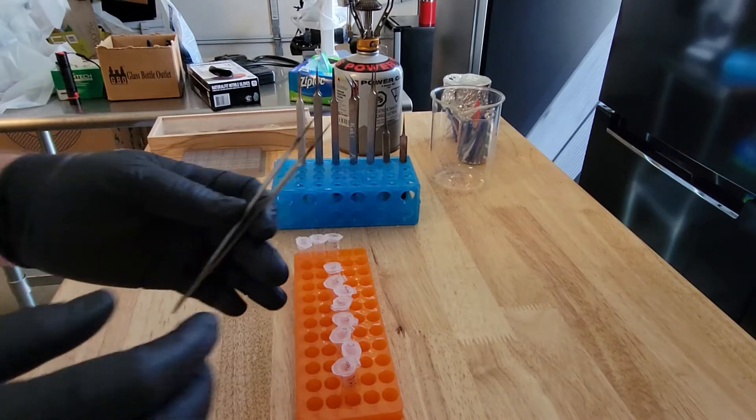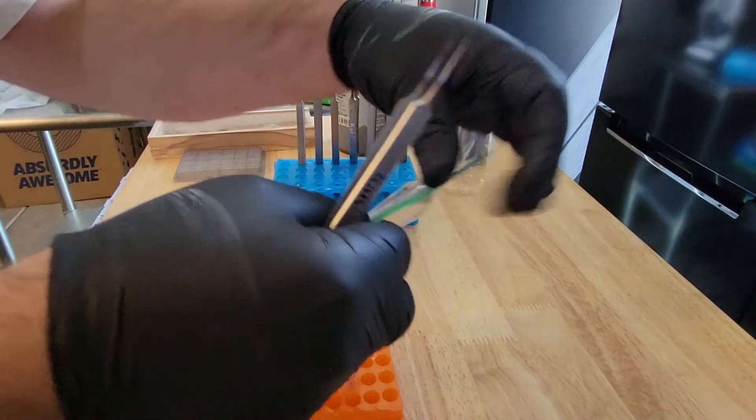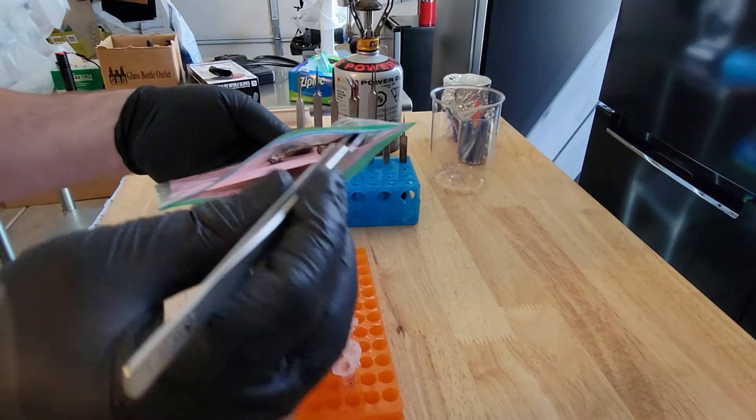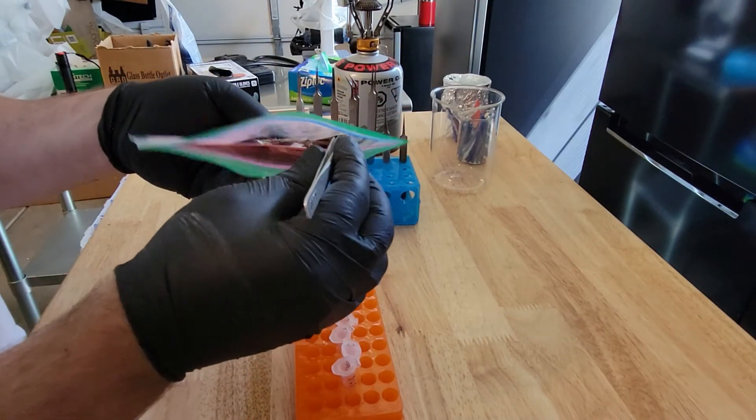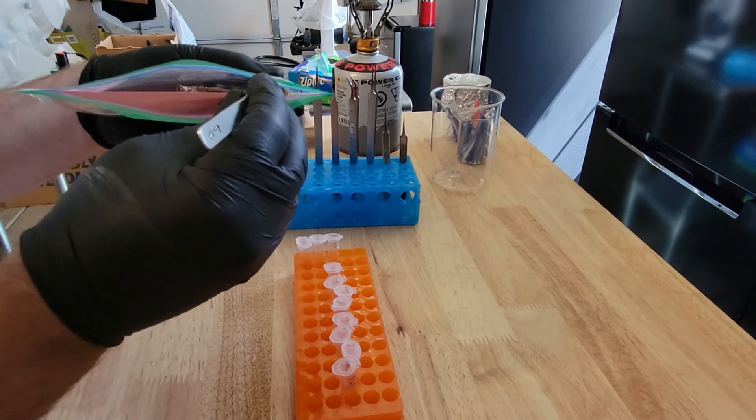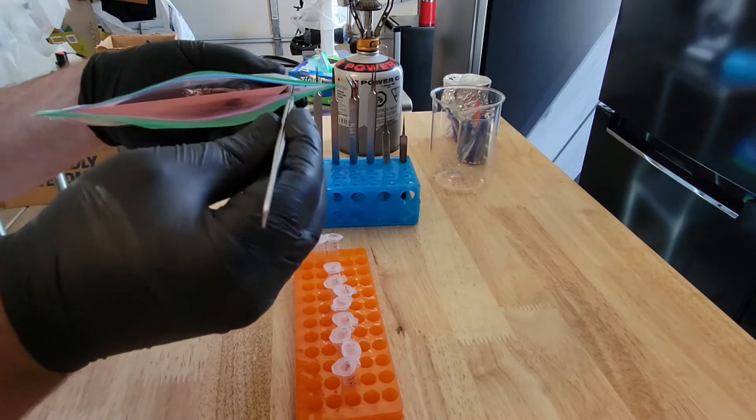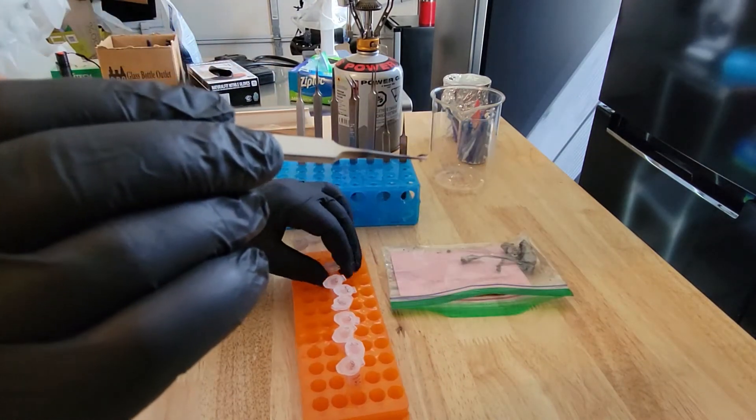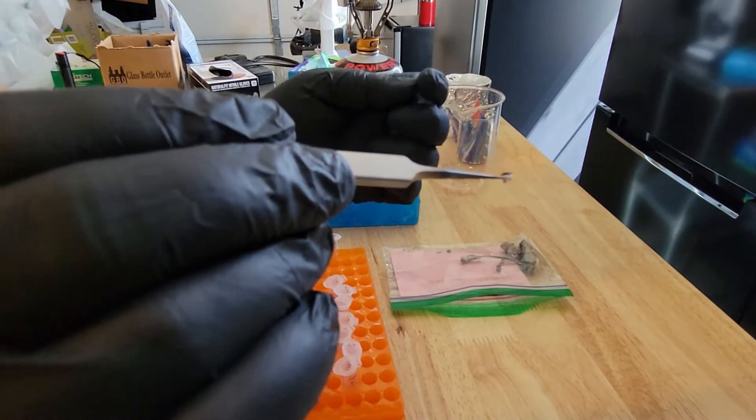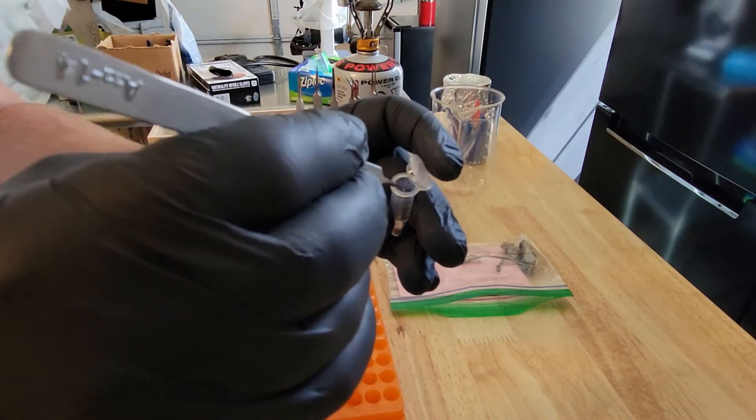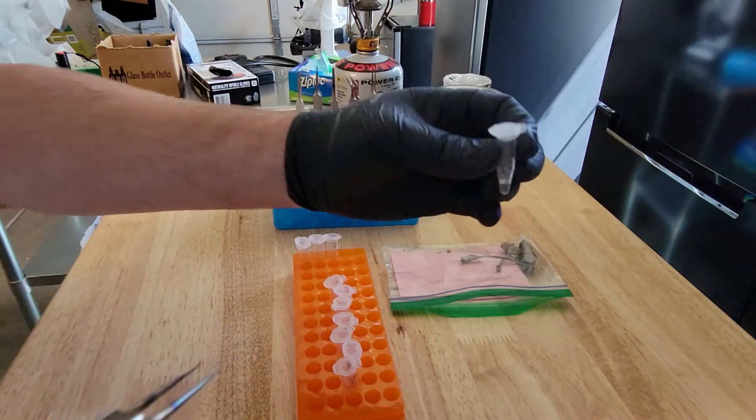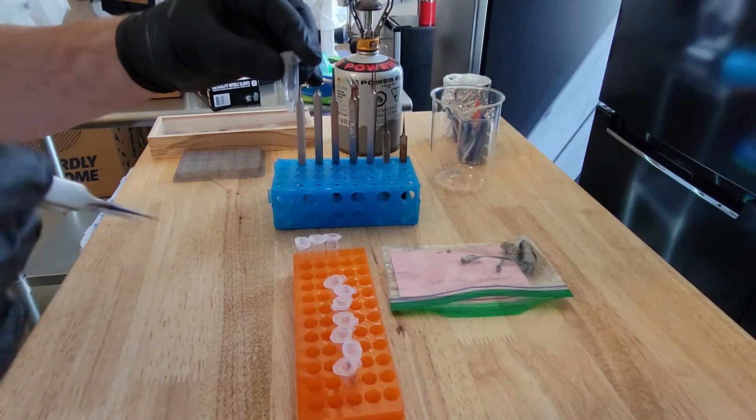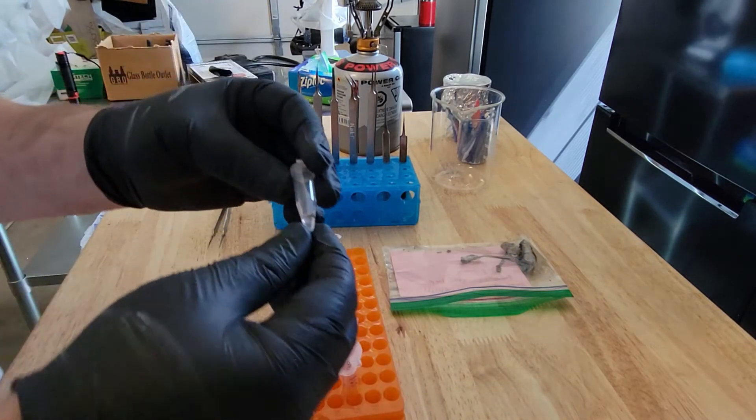Once we've sterilized our tweezers, we're going to take a sample of mushroom. I'm not going to touch the mushroom itself. I'm just going to stick the tweezers into the bag and pull off a very small piece. A very tiny piece of tissue. Even this is more than is necessary. I'm going to place it into the tube. Close it. Now you can see the small piece of mushroom floating in the tube.